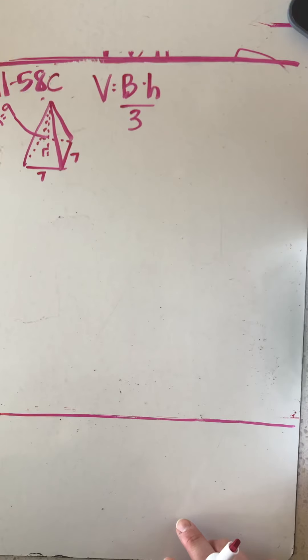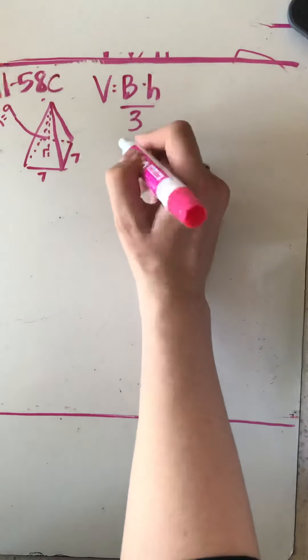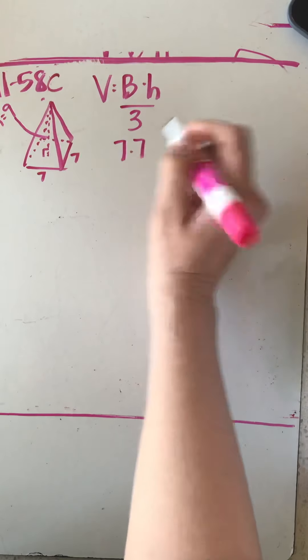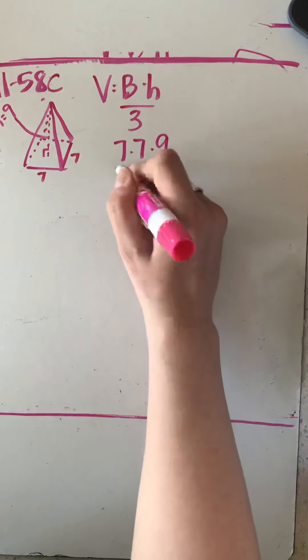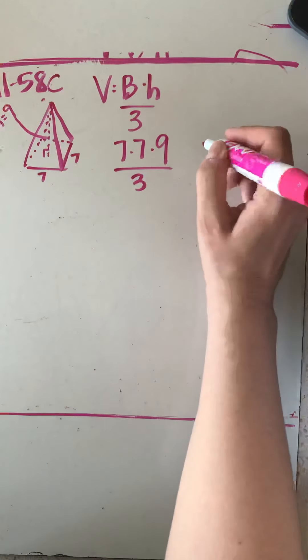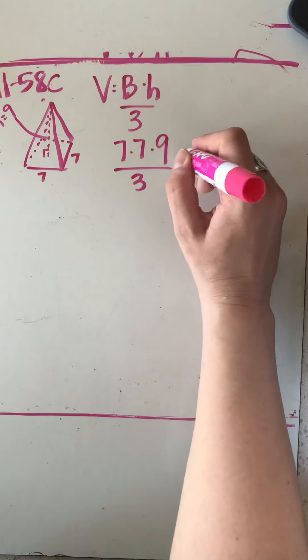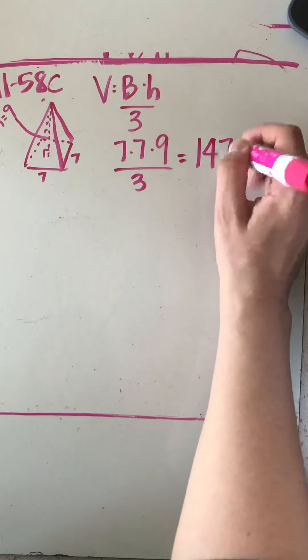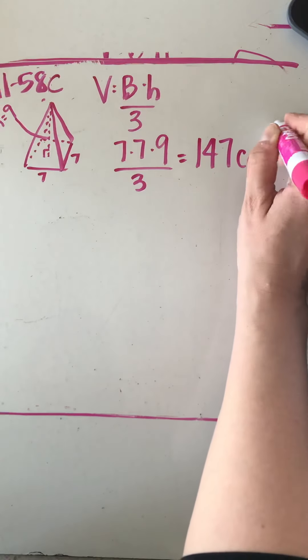So base area because it's a square, the area of a square is side times side or base times height. So seven times seven. The height is nine and if I divide that number by three I'm going to get the answer 147 centimeters cubed.